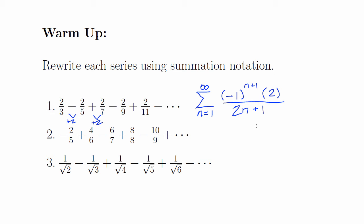The next series is also infinite, so I'm going to sum from n equals 1 to infinity. It is also an alternating series, so I will have some form of negative 1 raised to a power. This time we start with a negative first term, so I just need negative 1 to the power n.